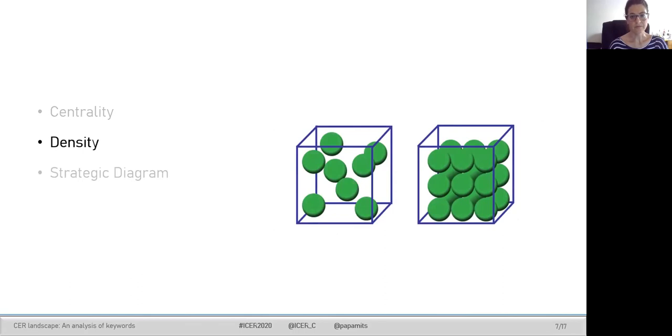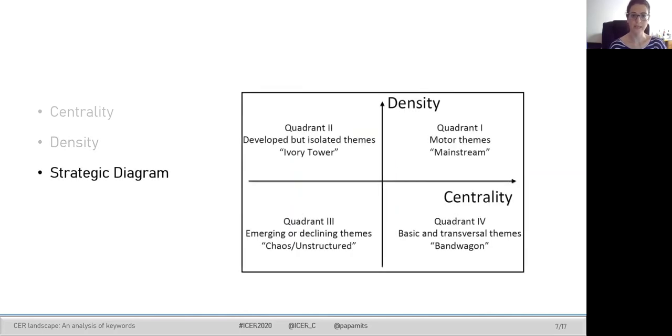Furthermore, density refers to how cohesive the cluster of terms is—the number of direct ties observed for the cluster divided by the maximum number of possible ones. Combining centrality and density creates a space within which all clusters can be located in relative positions. This space is the strategic diagram.